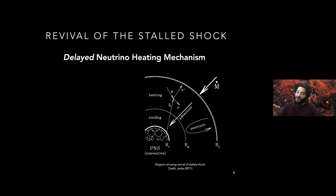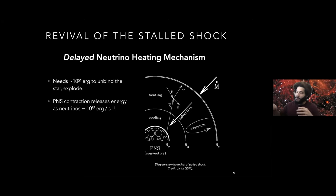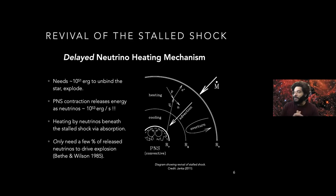How do we drive this stalled shock to lead to a successful explosion? A schematic diagram shows the proto-neutron star in the middle. We can tap into energy from that cooling, contracting neutron star to revive the shock: as the proto-neutron star contracts, you can absorb some of the neutrinos emitted behind the stalled shock and use them to heat up the shock and drive a successful explosion. This is known as the delayed neutrino heating mechanism, or neutrino-driven convective explosion mechanism. You only need to tap into a few percent of the released neutrinos, so it can be quite efficient.